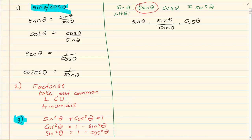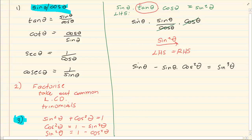When writing, it is important that you write on one level so you can see where you can cancel. You mustn't put the cos theta at the bottom when it is on top — keeping them on one level makes cancellation clear. In this case, I can cancel cos theta with cos theta, which gives an answer of sin squared theta. The left hand side is exactly the same as the right hand side.